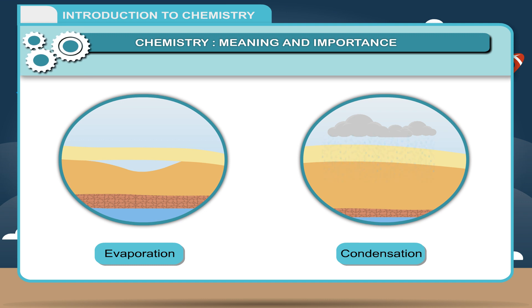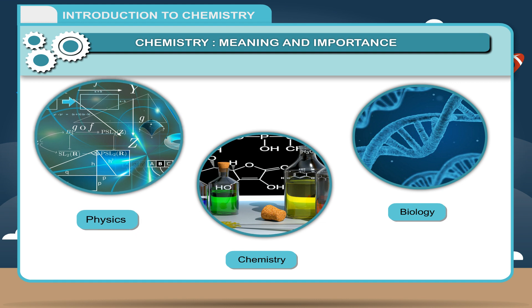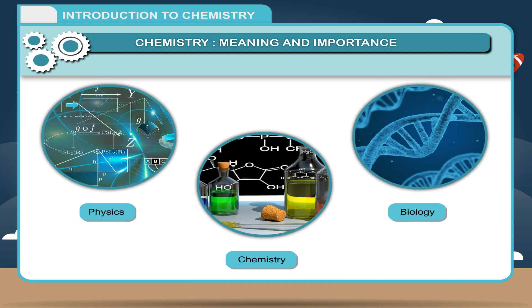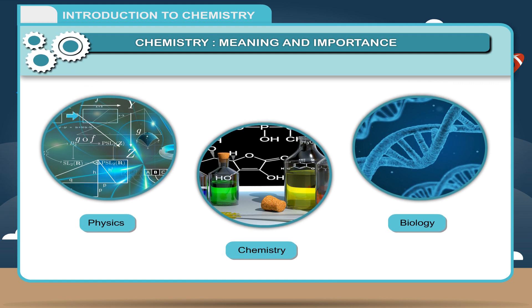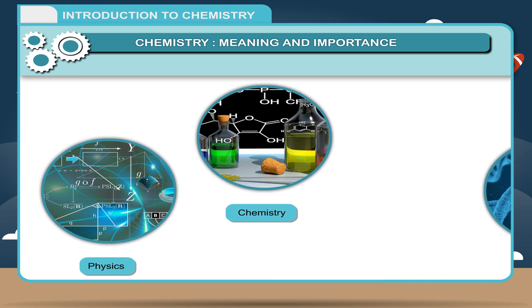But now onwards we will divide your field of study into various branches of science, namely Physics, Chemistry, and Biology. The branch of science which deals with the study of materials and substances, especially about their composition, methods of preparation, properties, and their reactions with other substances is called Chemistry.